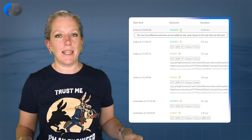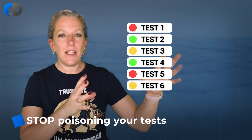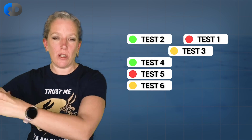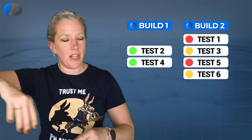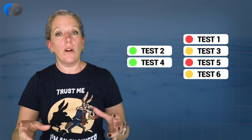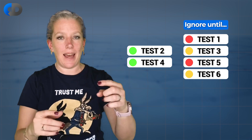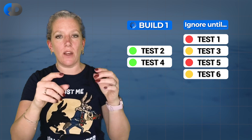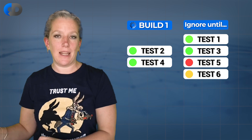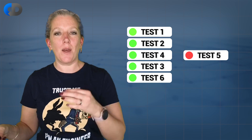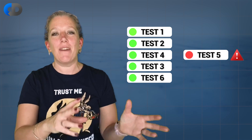The next step is to stop poisoning your tests. Take these flaky tests and move them out of your standard test suite. Either run them on a different build, a different agent, or you can use something like an ignore-until tag, which you put on the code. For the next two weeks, for example, you wouldn't run that test, giving you time to fix it. If the test wasn't fixed in two weeks, it would pop back up and start failing again. That's one way to temporarily quarantine your tests.